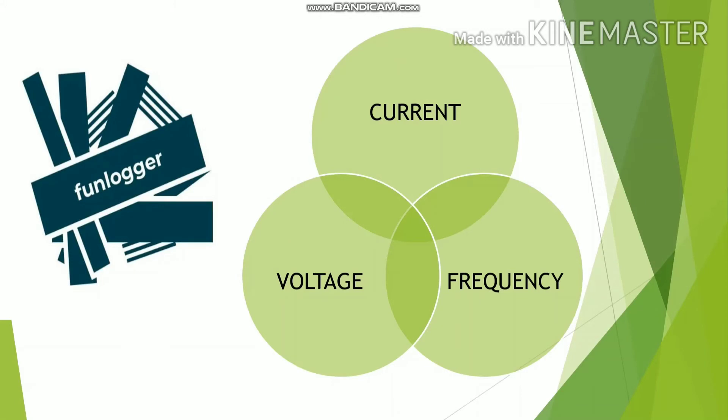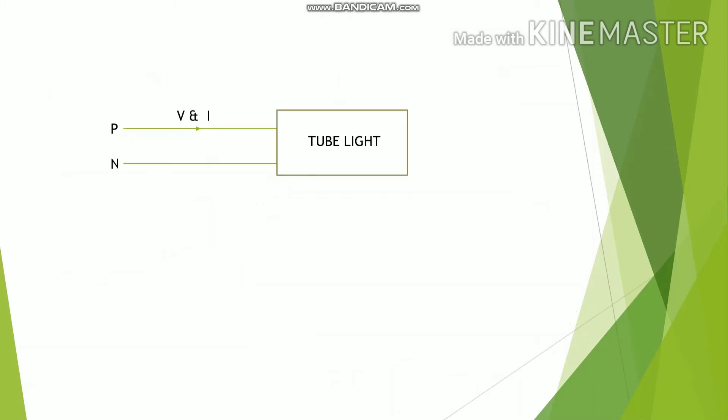The third term is frequency. If you understand the frequency, then you will know easily what is the power factor. Let's take an example of tube light. This is the tube light to which two wires are connected: one is phase, one is neutral. Through phase, voltage and current is flowing at 50 hertz. Then what is that 50 hertz? It's a frequency. We all know that in India, government supplied electricity at 50 hertz. That means this tube light will turn on and turn off 50 times in a second.